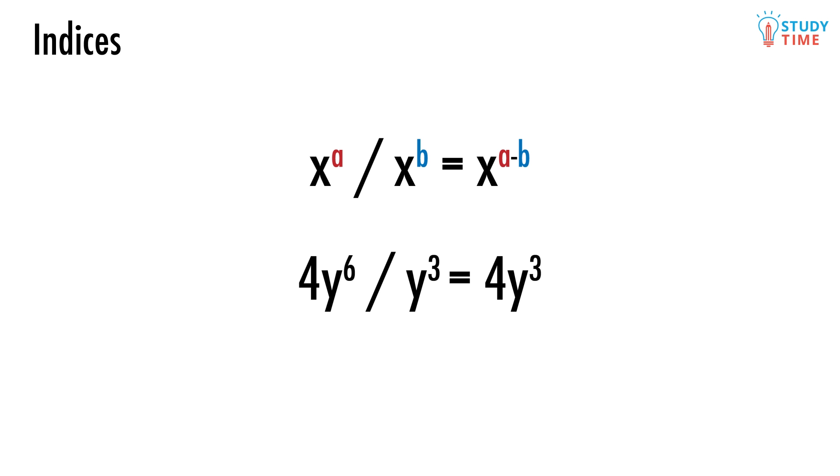Here's an example of where this index law might prove itself useful. We're going to leave the 4 alone. On the top, the index of y is 6, and on the bottom, it's 3. So all we need to do is take away 3 from 6, which gives us our answer: 4 times y to the power of 3.